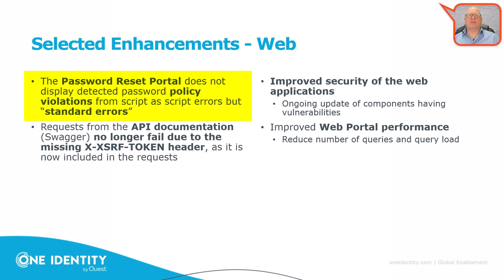Some enhancements from the web side. First, the password reset portal: password policy violations were previously displayed as script errors. Some cosmetic changes now show the same error messages as standard errors, making things a bit nicer to read. There is also a short improvement to the API documentation — the Swagger front for REST services — which was sometimes failing with a token header problem. This is now finally solved.